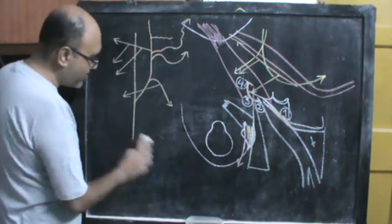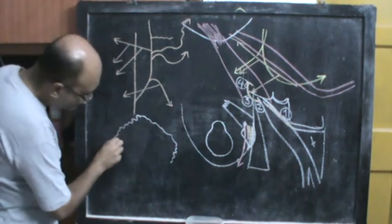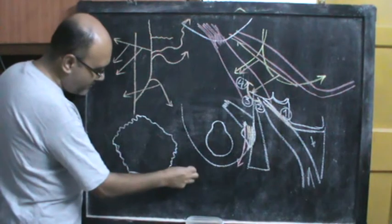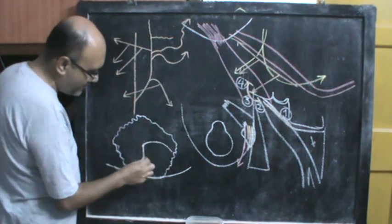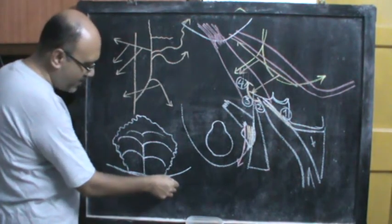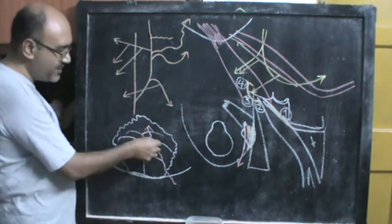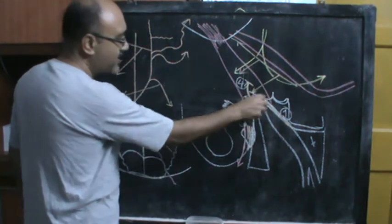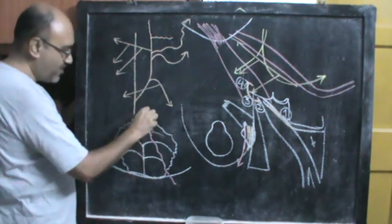In the suboccipital region, we can identify the occipital bone with its external occipital protuberance, external occipital crest, superior nuchal line, inferior nuchal line, and highest nuchal line. The occipital artery ascends through this region; when it is below the superior nuchal line it is in the suboccipital region, and when it rises above the superior nuchal line it enters the scalp.